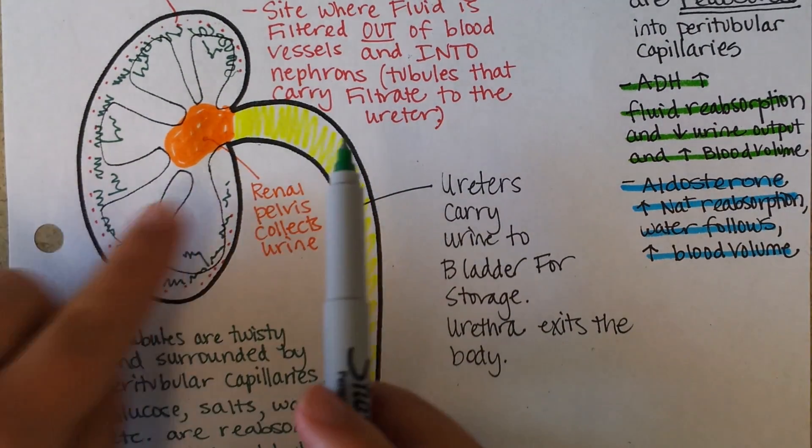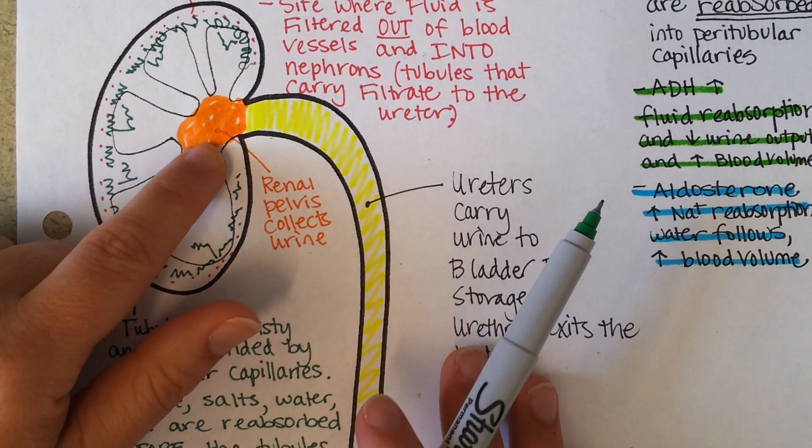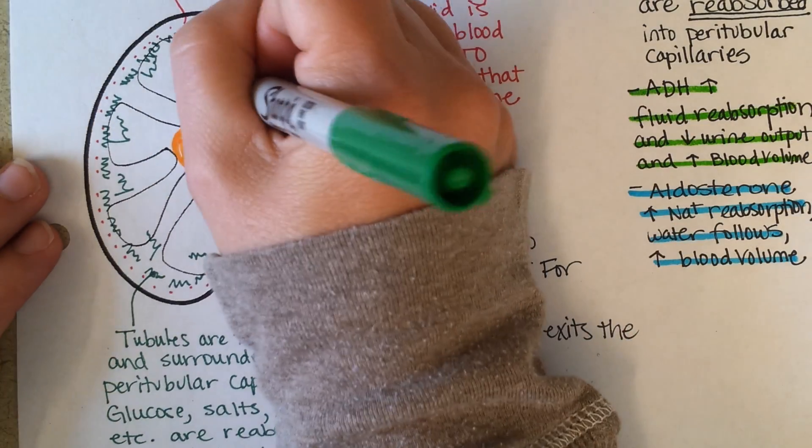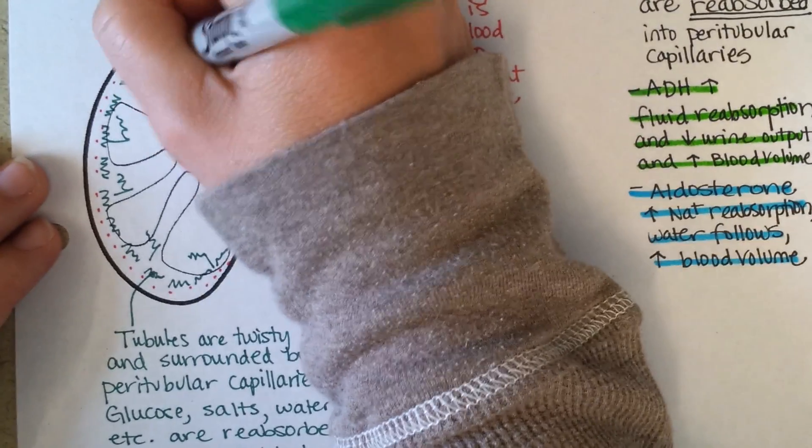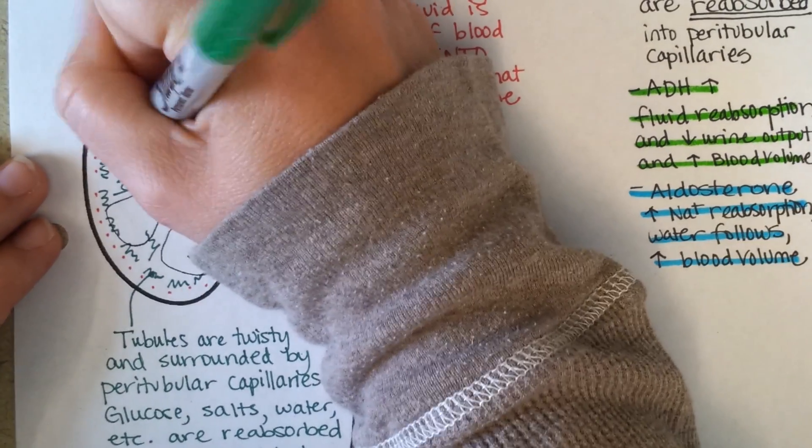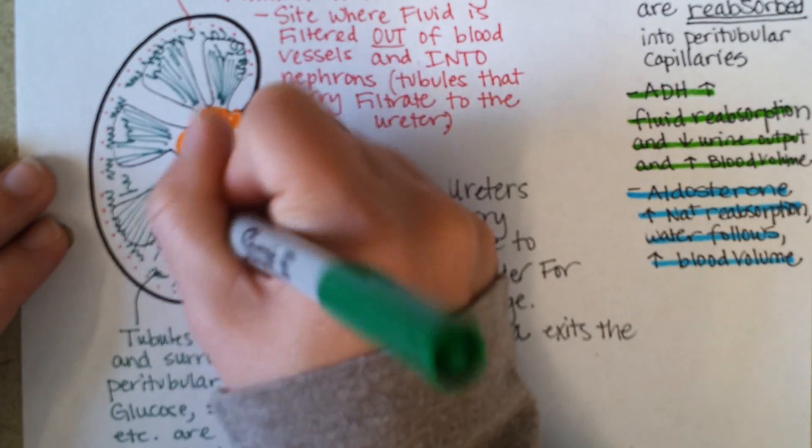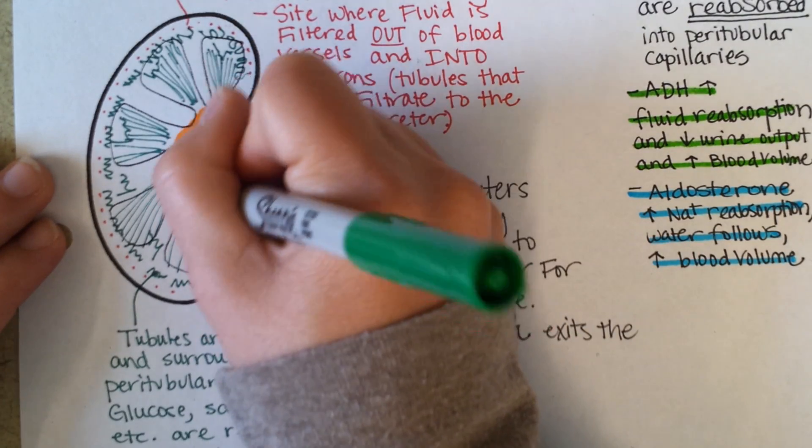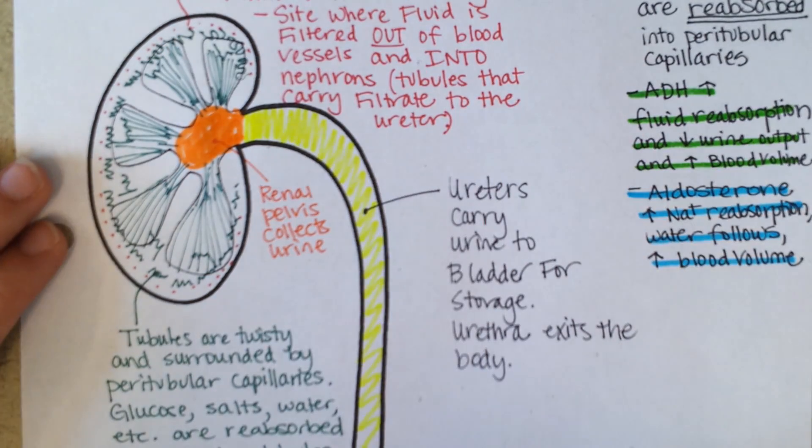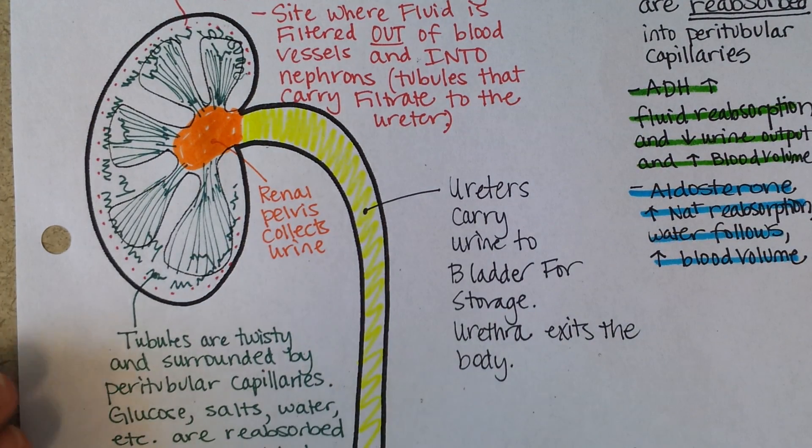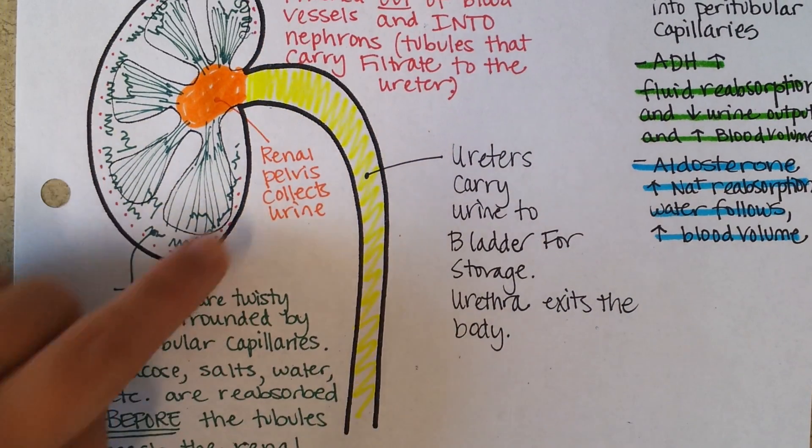Now, between the twisty tubules that are surrounded by paratubular capillaries and the renal pelvis are the collecting ducts, and they're long and straight, and they collect from the twisty tubules in each of the different lobes of the kidney, and then their fluid enters into the renal pelvis. In the collecting duct, at that point, only water can still be reabsorbed. Salts and glucose had to have been reabsorbed up in the twisty parts.